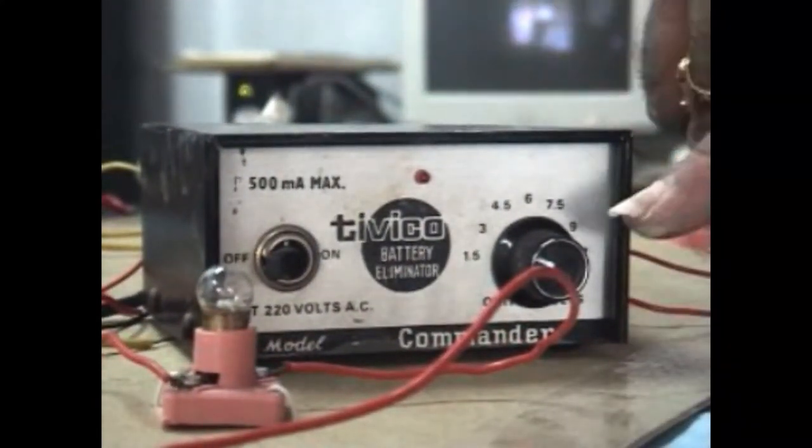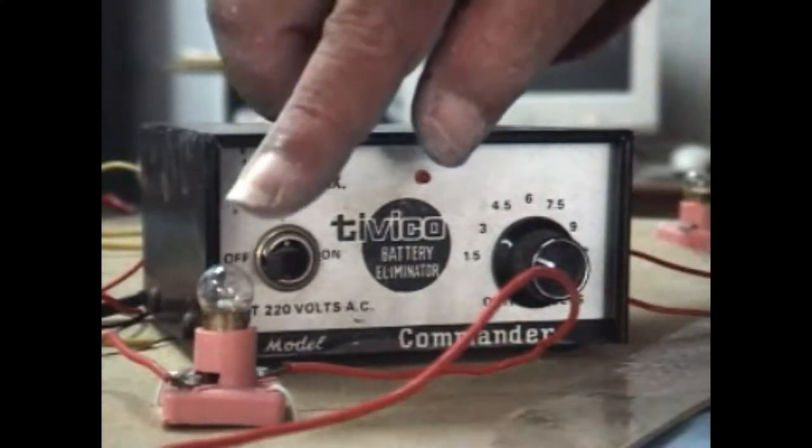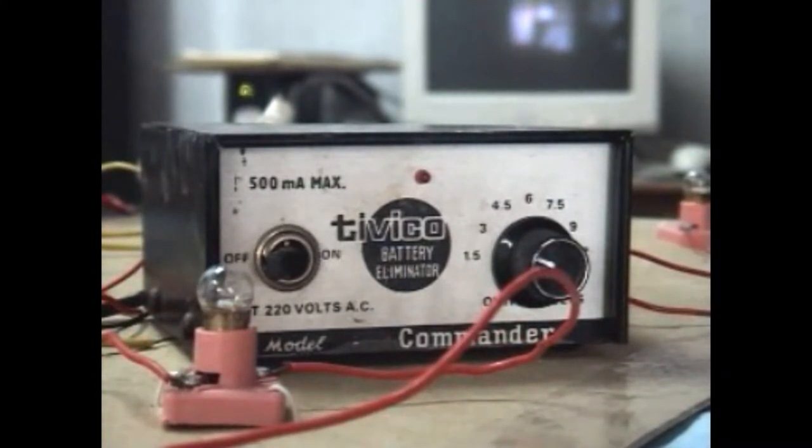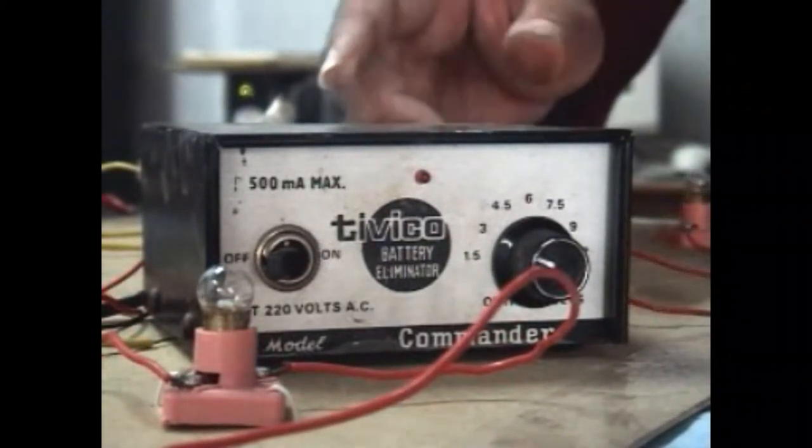Now, what you will observe is if the potential difference is low, then the brightness of the bulb is also low. When we increase the potential difference, the brightness will be increased, which proves Ohm's law.